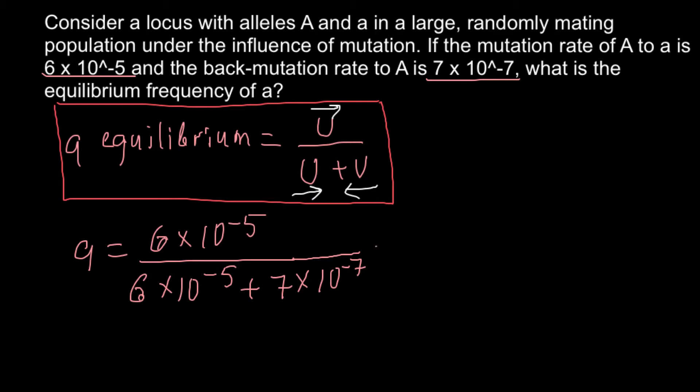So what we're going to get here would be 0.00006, same number on the bottom, forward mutation,